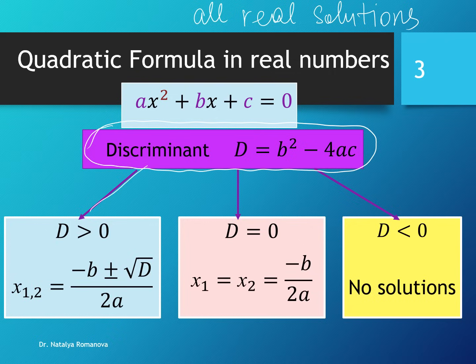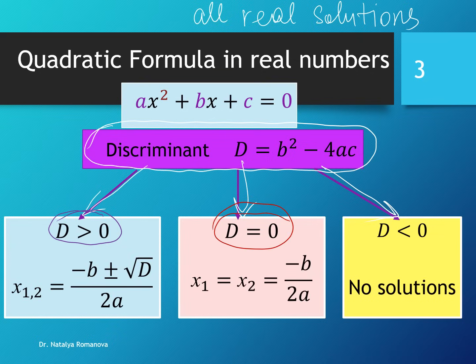We can have three cases. The first case: if the discriminant is greater than 0, our quadratic equation has two different solutions, defined by the formula (-b ± √D) / 2a. If the discriminant equals 0, our quadratic equation has two equal solutions, defined by the formula -b / 2a. If the discriminant is negative, our quadratic equation has no solution.